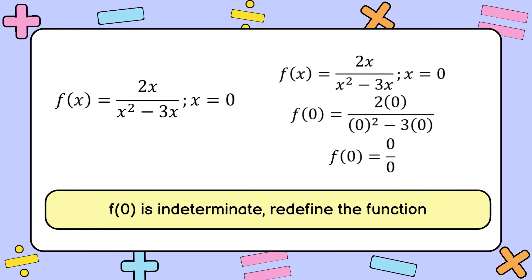The first step to determine the type of discontinuity is to evaluate the function with our given value of x. Substituting 0 for all x in the function, we get 2 times 0 over 0 squared minus 3 times 0. Simplifying, we get 0 over 0, making it indeterminate.